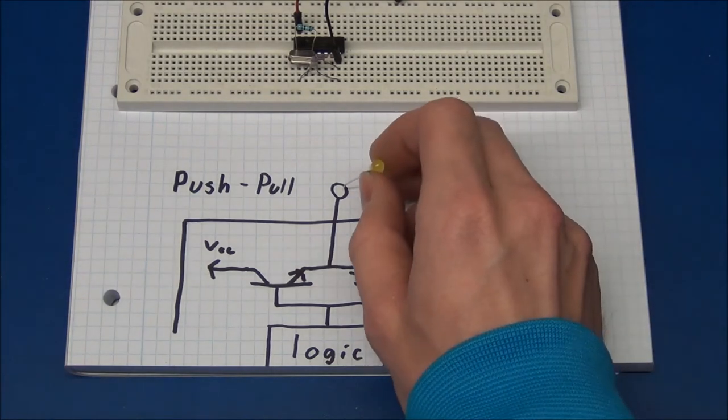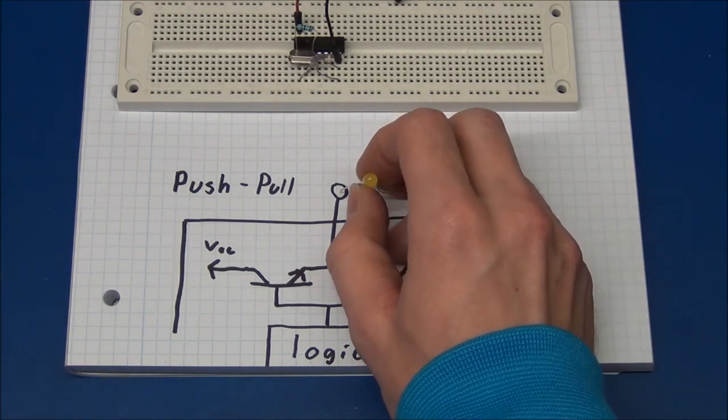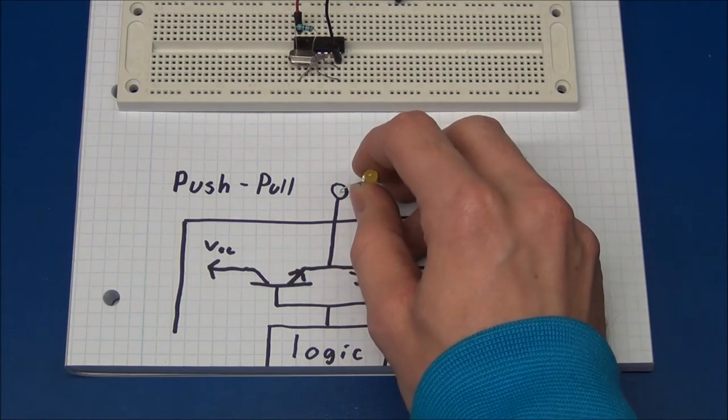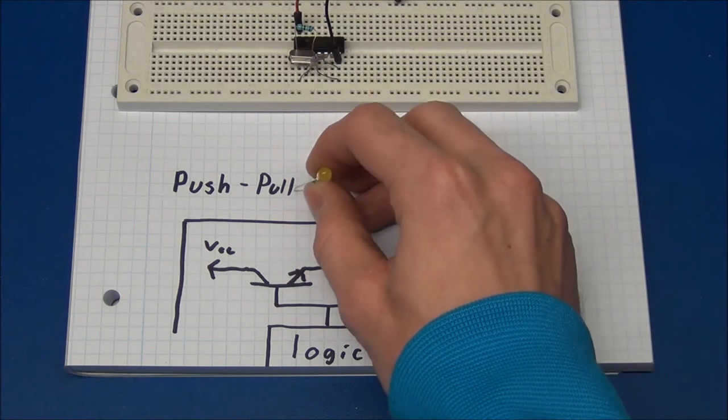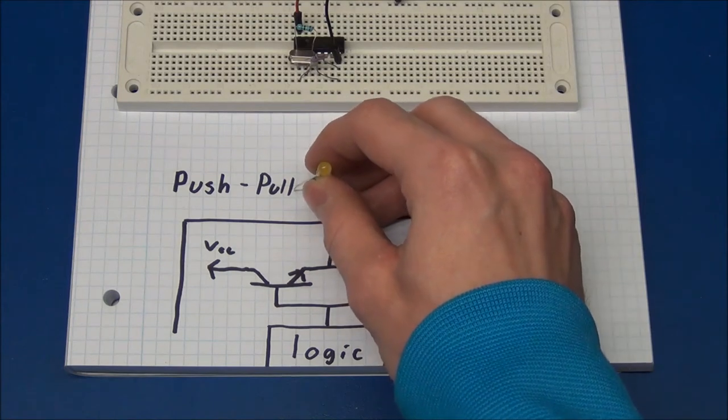You could either put an LED from the output to ground, and it will light up when the output is high, or you could put an LED from the output into the high voltage, and it will light up when the output is low.